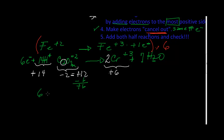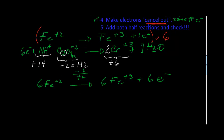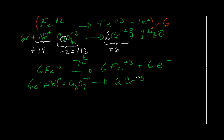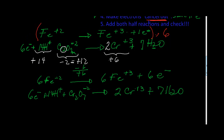So let's rewrite. We now have six Fe²⁺ going to six Fe³⁺ and six electrons. The second half-reaction stays the same: six electrons plus 14 H⁺ plus the dichromate Cr₂O₇²⁻, after the arrow giving two Cr³⁺ and seven waters.